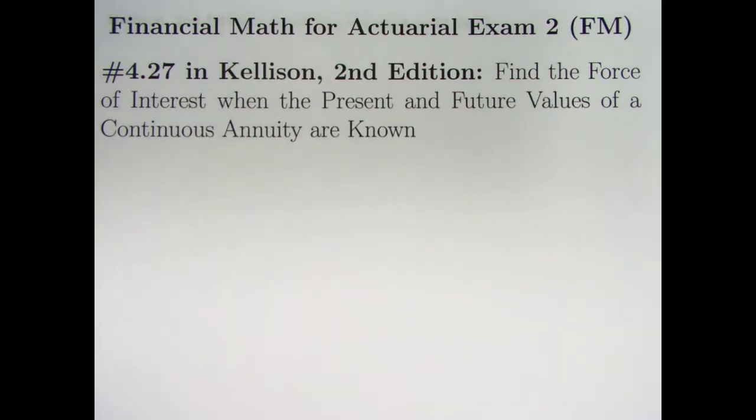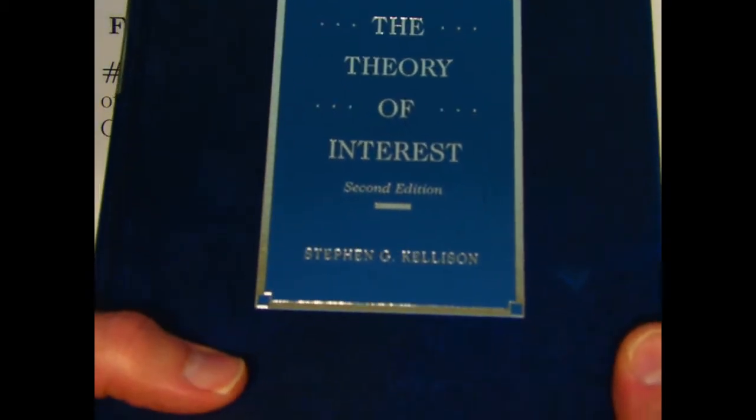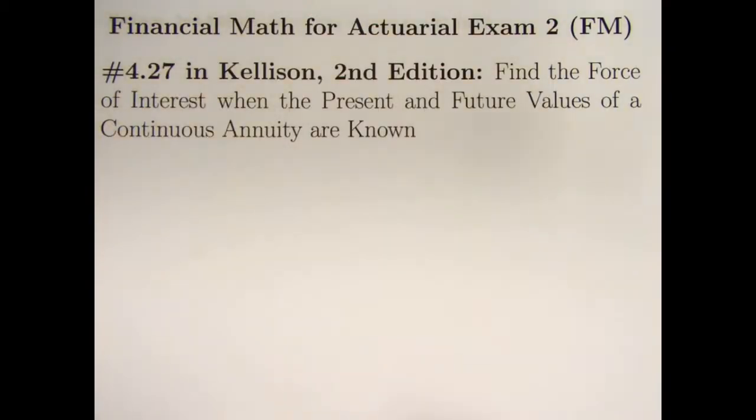In this video, we're going to continue to look at the idea of a continuous annuity and look at a problem from the second edition of The Theory of Interest by Stephen Kellison, instead of our usual practice of looking at problems from the Mathematics of Investment and Credit, 6th edition by Samuel Broverman, because I think Kellison has nicer and simpler problems related to continuous annuities.